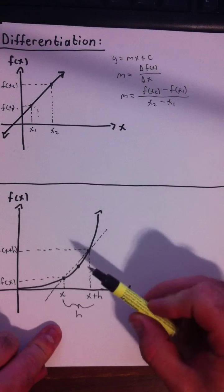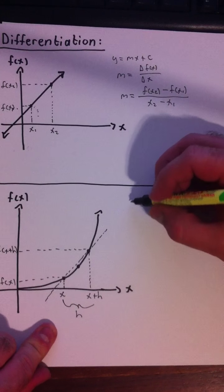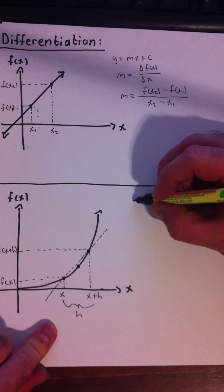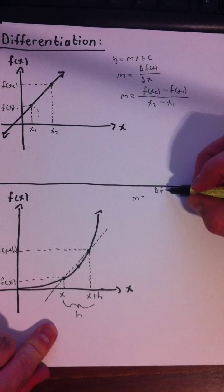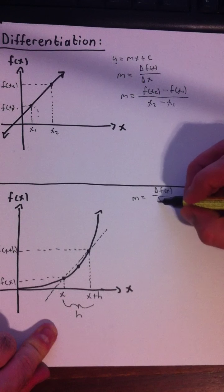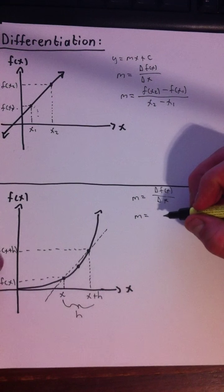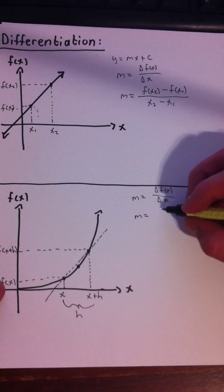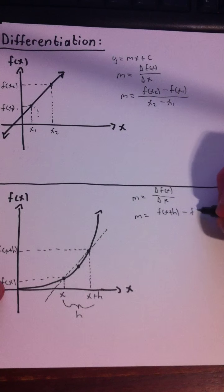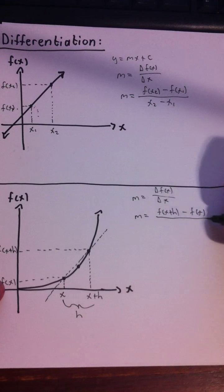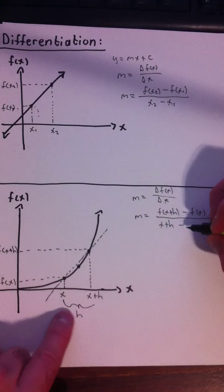So now we can find the gradient of this line running through those two points by just saying that m equals the change in f of x divided by the change in x again. That'll give us f of x plus h minus f of x divided by the change in the x value. So x plus h minus x.